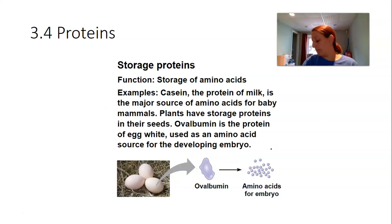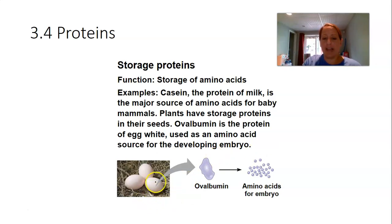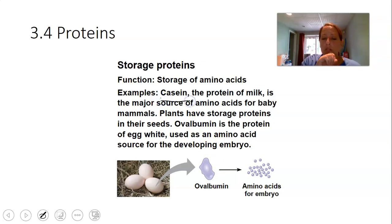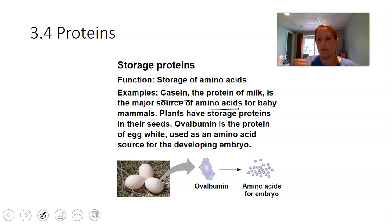Some proteins are involved in storage — serving as a repository of amino acids. For example, inside a fertilized egg is a protein called ovalbumin, which stores amino acids that the growing embryo uses to construct other proteins. Casein, the milk protein, is a major source of amino acids for baby mammals that feed on milk.